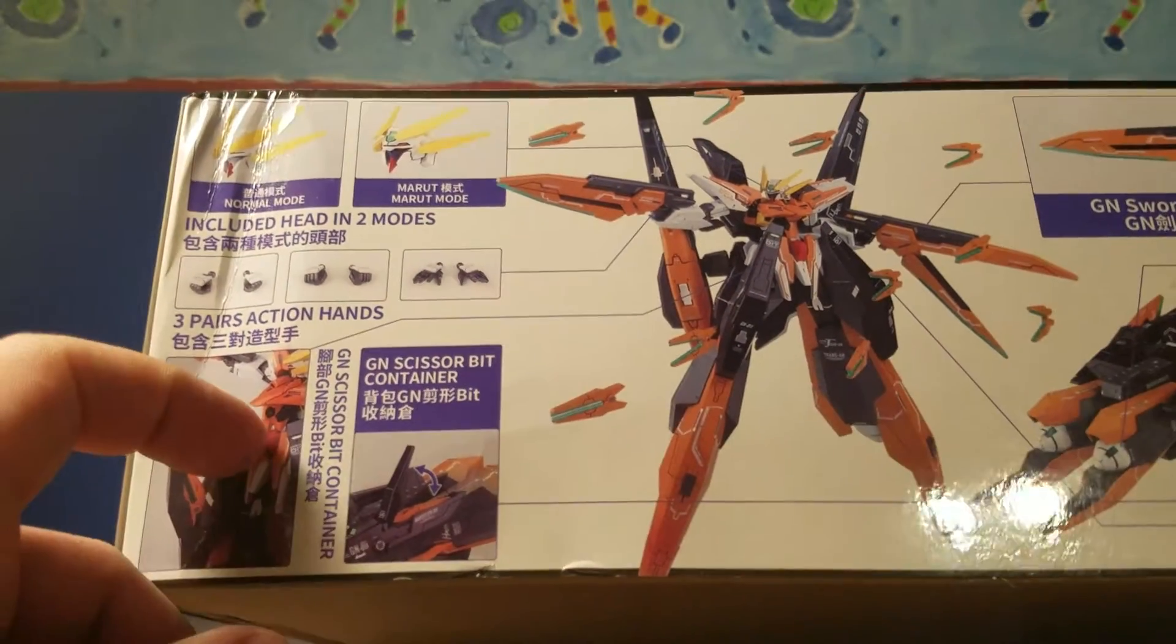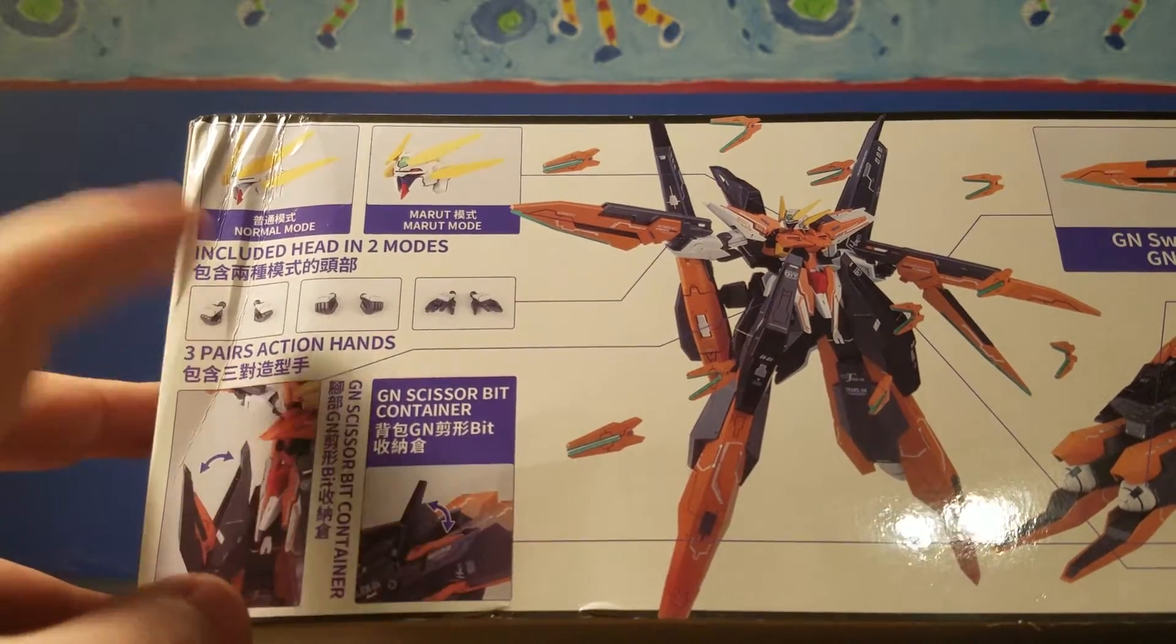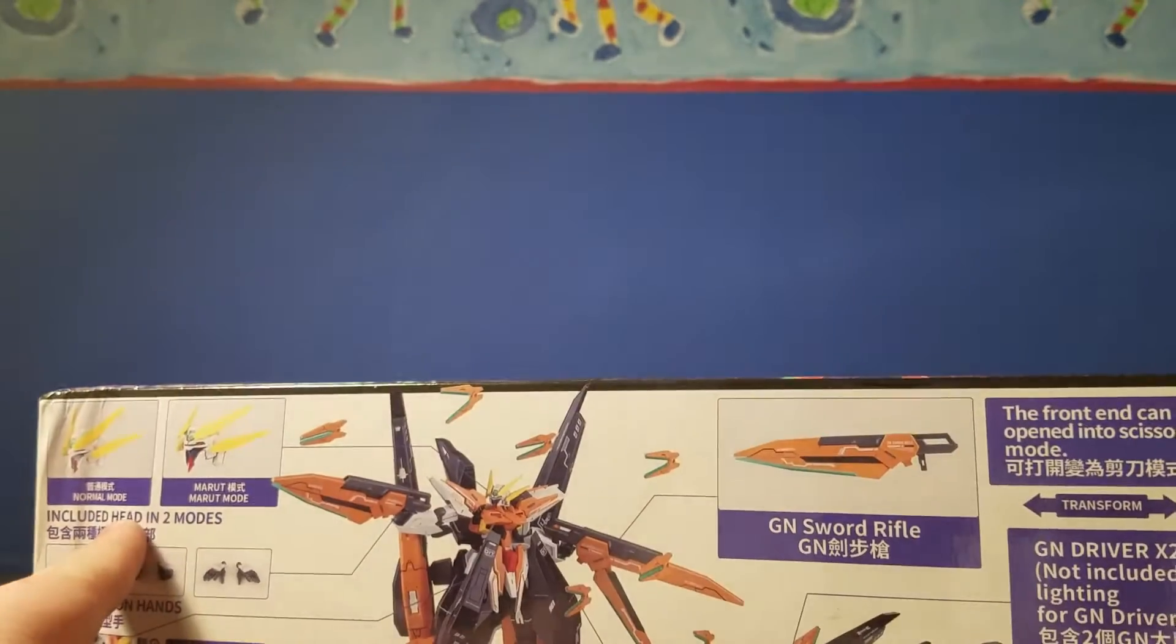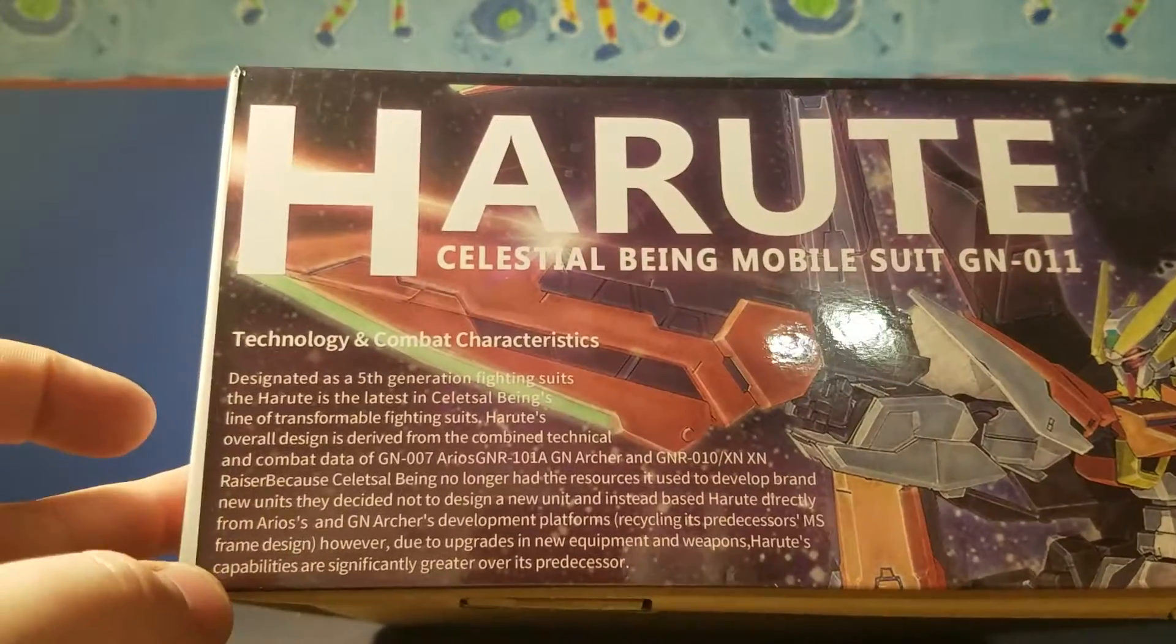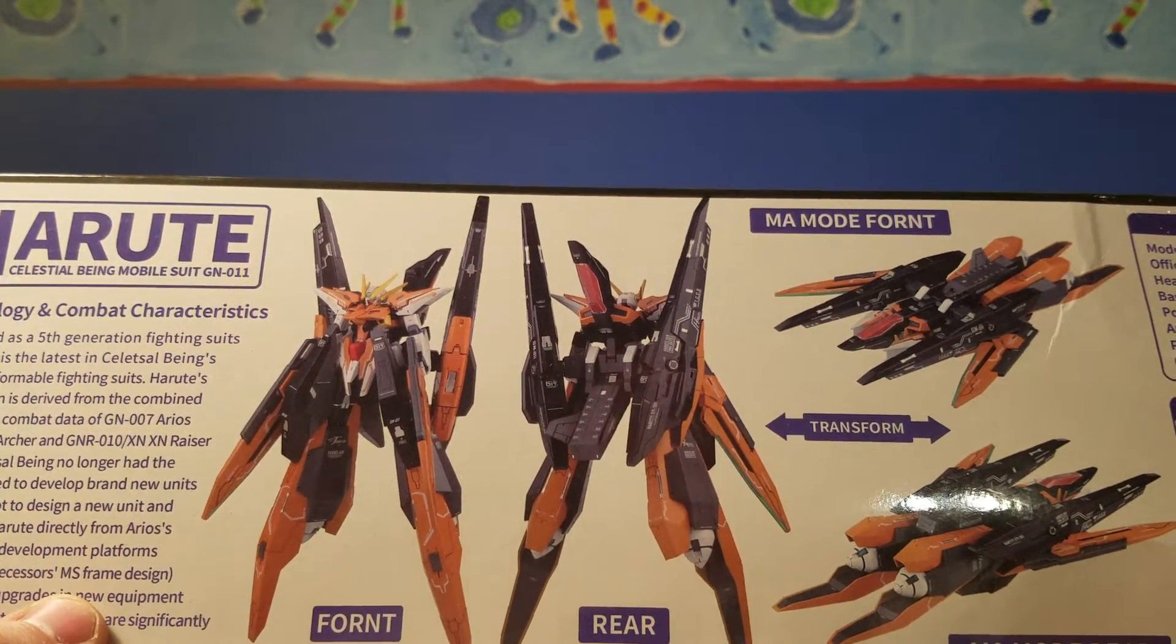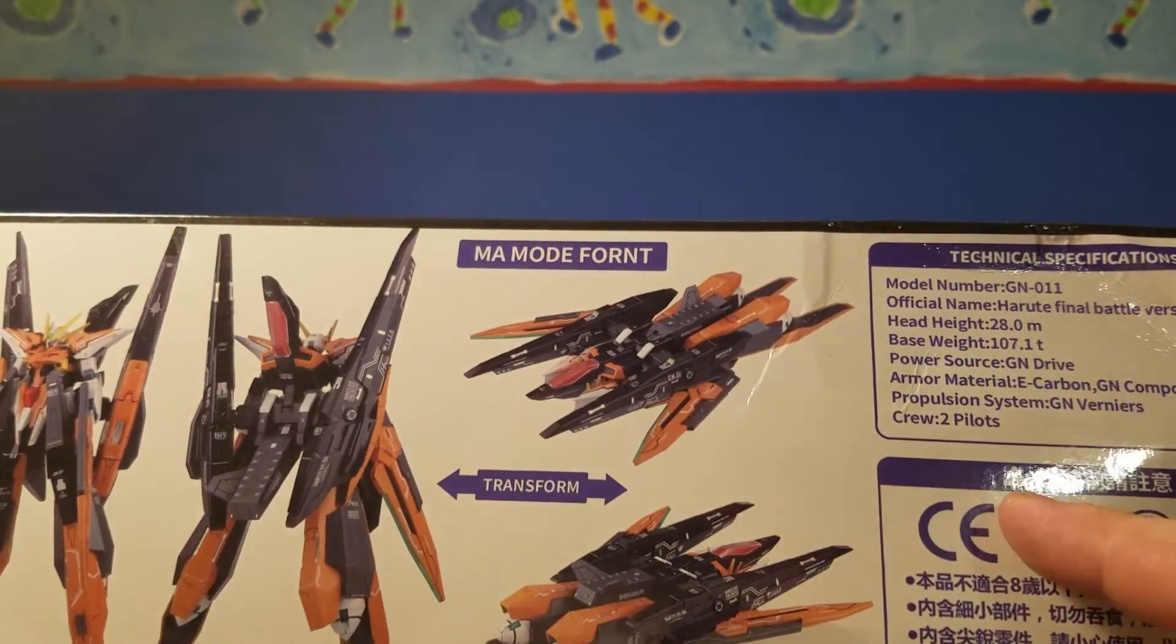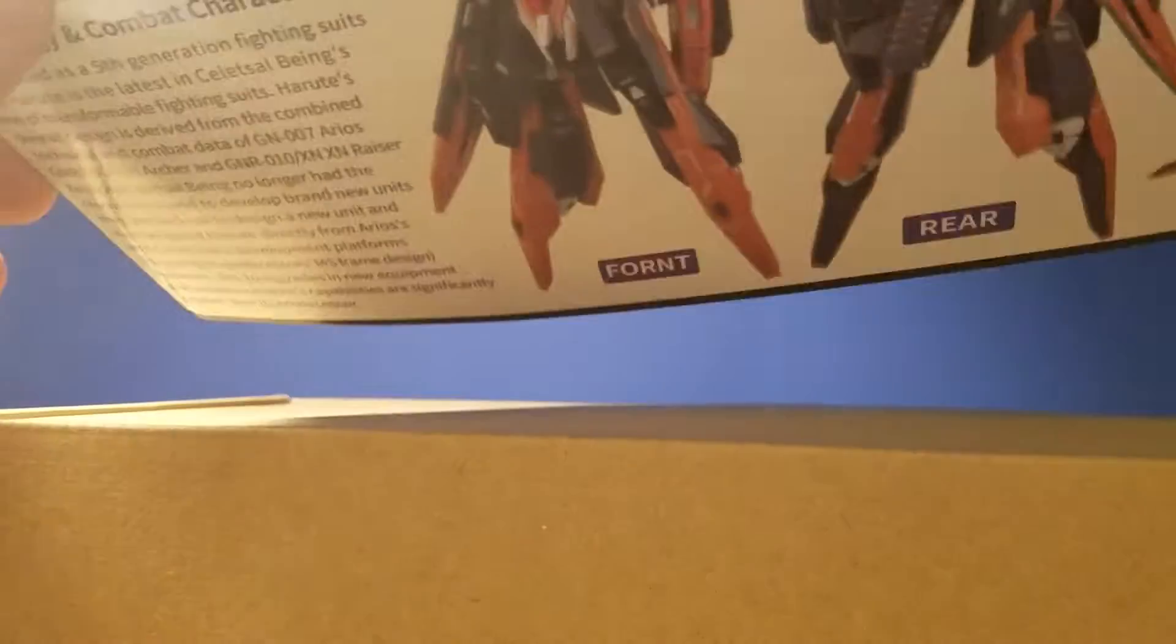And it's just talking about all the different features. Box got a little banged up. Comes with two heads apparently. It's got a little blurb about the Harute or Harute, I don't know how to pronounce it. Piloted by two pilots, that's interesting. I'm not sure if that's so accurate. But yeah, I'm kind of disappointed the box got a little banged up, but oh well, as long as everything inside is okay.